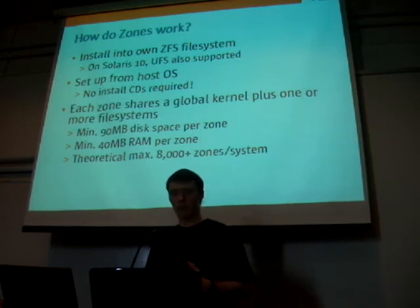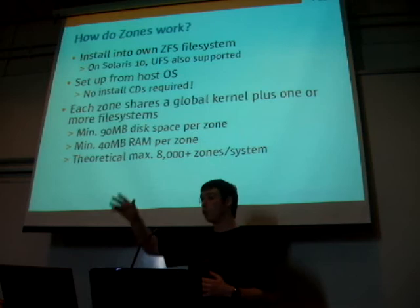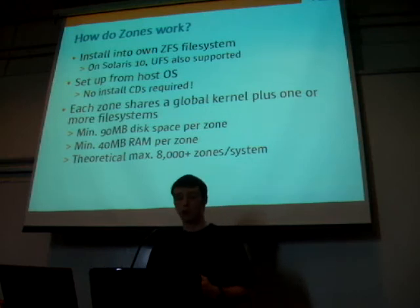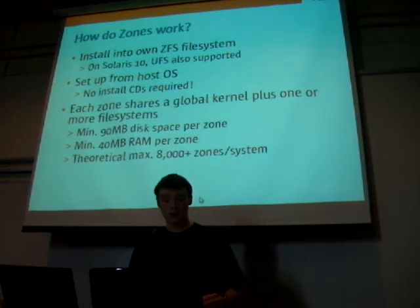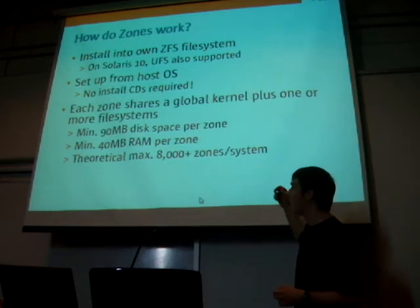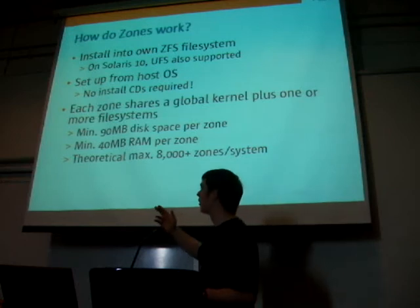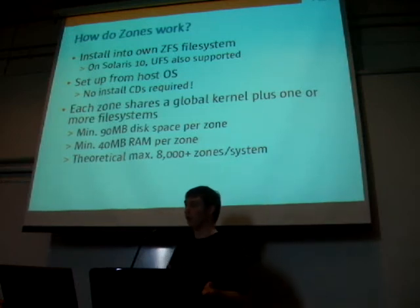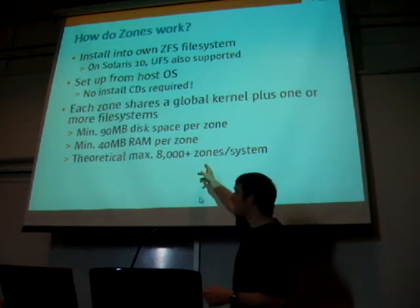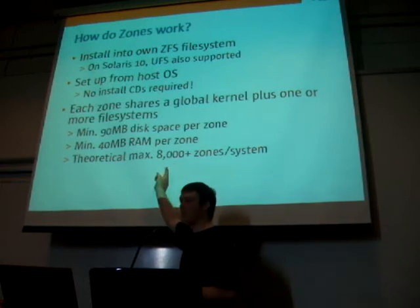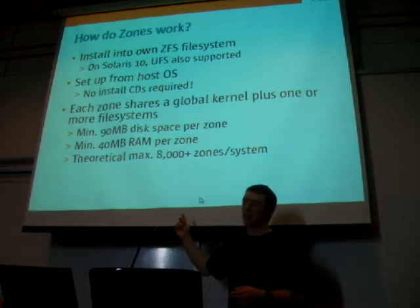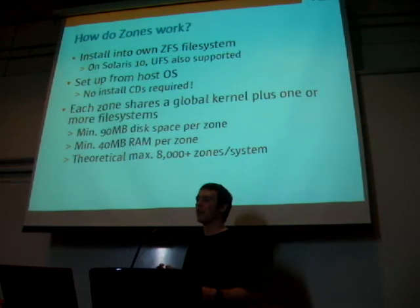An internet connection is not required for Solaris 10, but it is required for OpenSolaris because it pulls down updated packages from IPS and uses them to set up your new OS. In terms of resource requirements, you need 90 megabytes of disk space per zone and 40 megabytes of RAM for each zone, on top of the RAM you already need for running OpenSolaris itself, which is about 512 megabytes. Theoretically the maximum number of zones you can create is 8,000, but if you actually try to run 8,000 zones on a system I don't think they're going to run very fast.